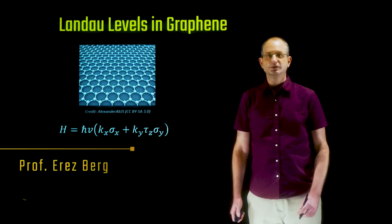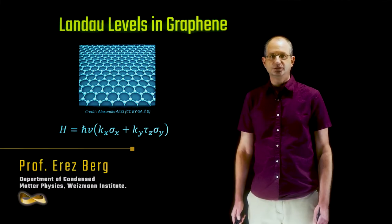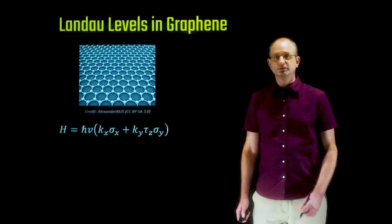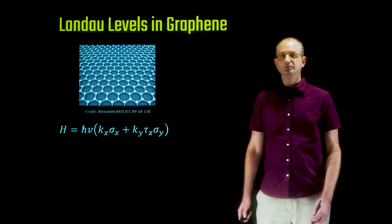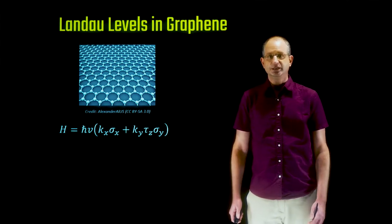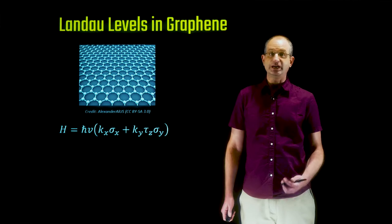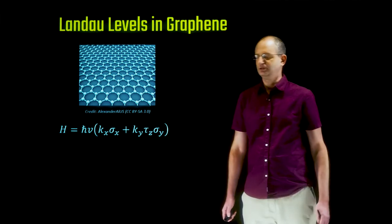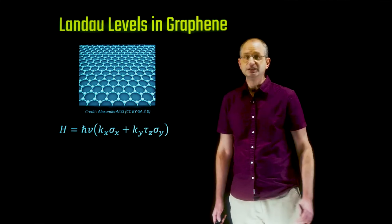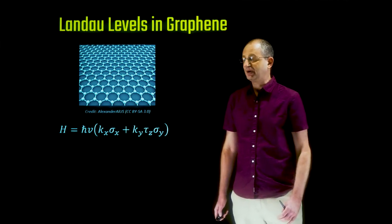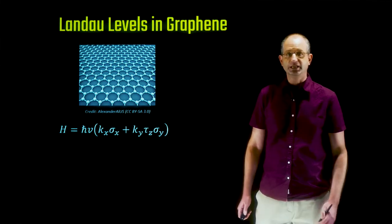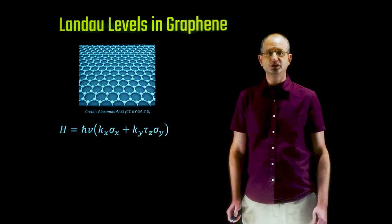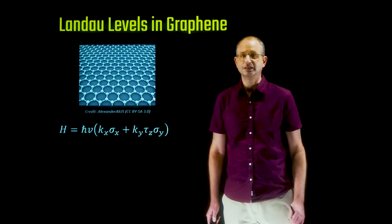In this video we're going to discuss Landau levels in graphene. In the previous lectures you saw that graphene is a 2D material and interestingly near the Fermi level it has a Dirac spectrum. The low-energy Hamiltonian has the form where k is momentum, sigma are Pauli matrices acting on the sub-lattice space, and tau_z equals plus or minus 1 corresponds to the two valleys K and K' of graphene.